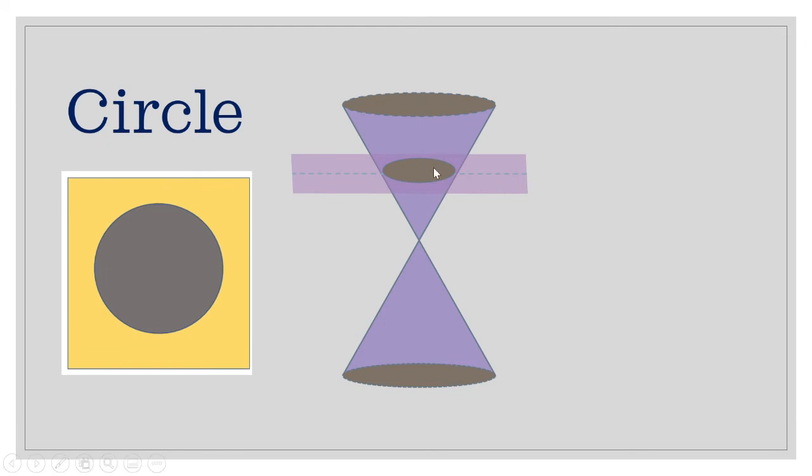If you look at this image right above, this would be the conic section generated, and that is a circle.